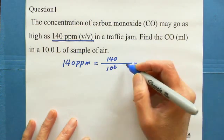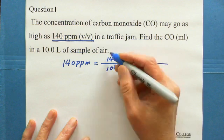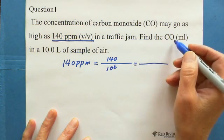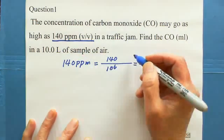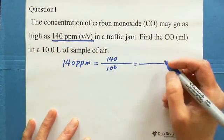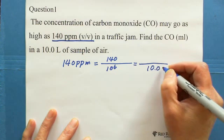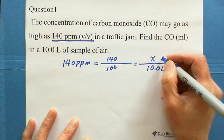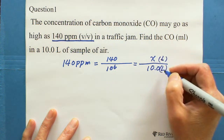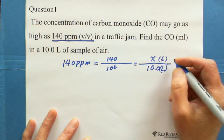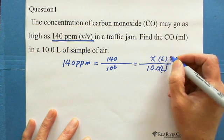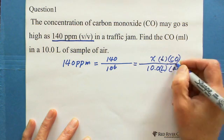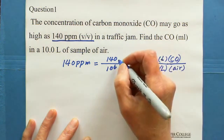On the other side, we can write — because this is the concentration — what is the volume of carbon monoxide in 10 liters of sample? So if we choose 10 liters, X will be in liters. Same units: X liter is carbon monoxide, and 10 liters is the air sample.